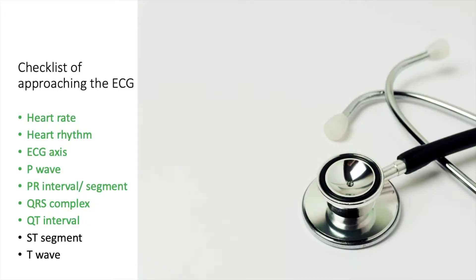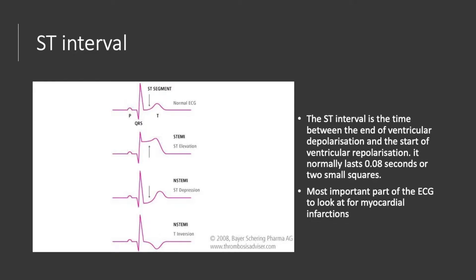The next aspect is the ST segment or ST interval. This is the time between the end of ventricular depolarization — in other words, the end of the QRS complex — and the start of the T wave, or the start of ventricular repolarization. It's normally around 0.08 seconds or two small squares. The most important thing about the ST interval is not how long it is, but where it is. The ST segment is perhaps the most important thing to look at when you're thinking about an MI or myocardial infarction.